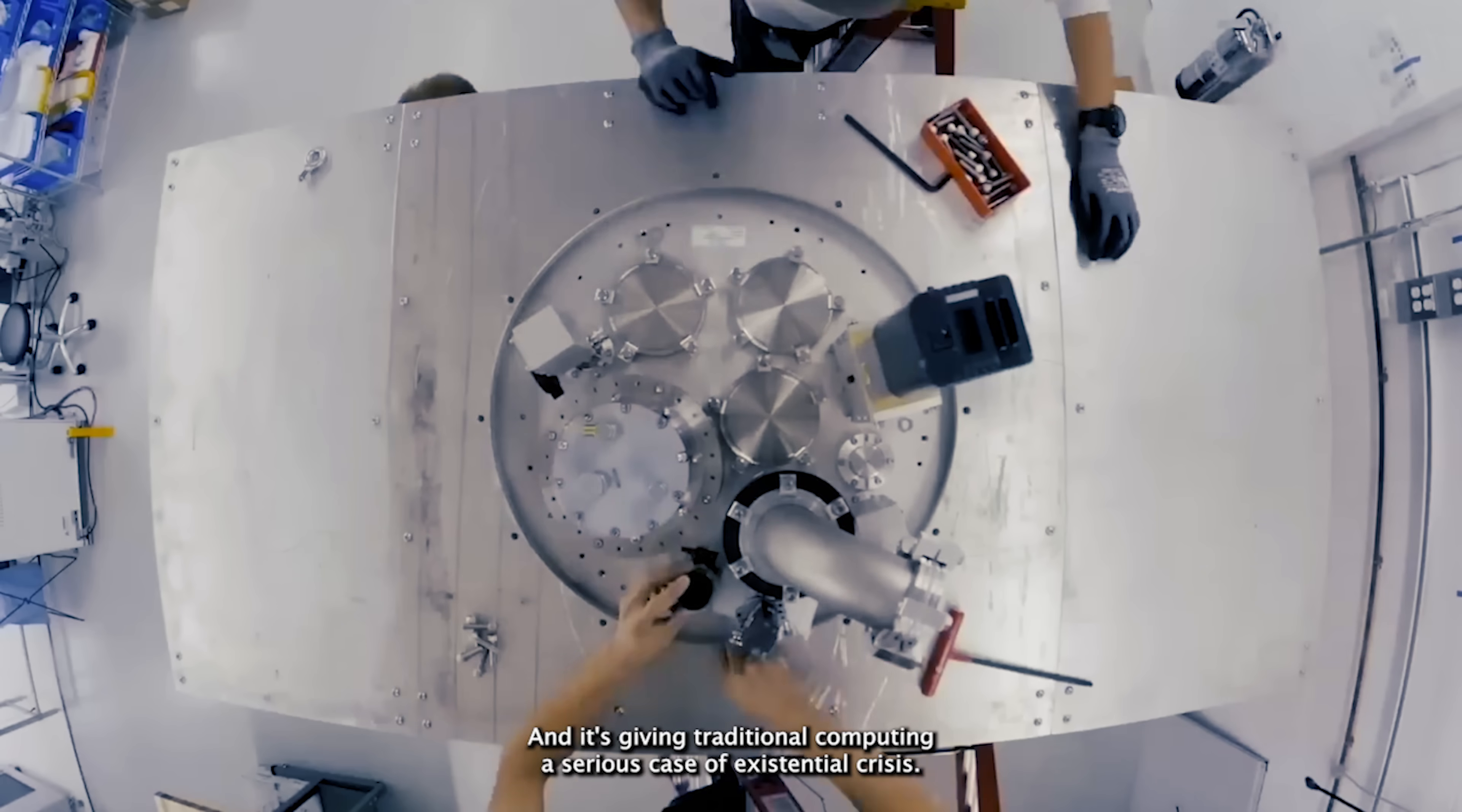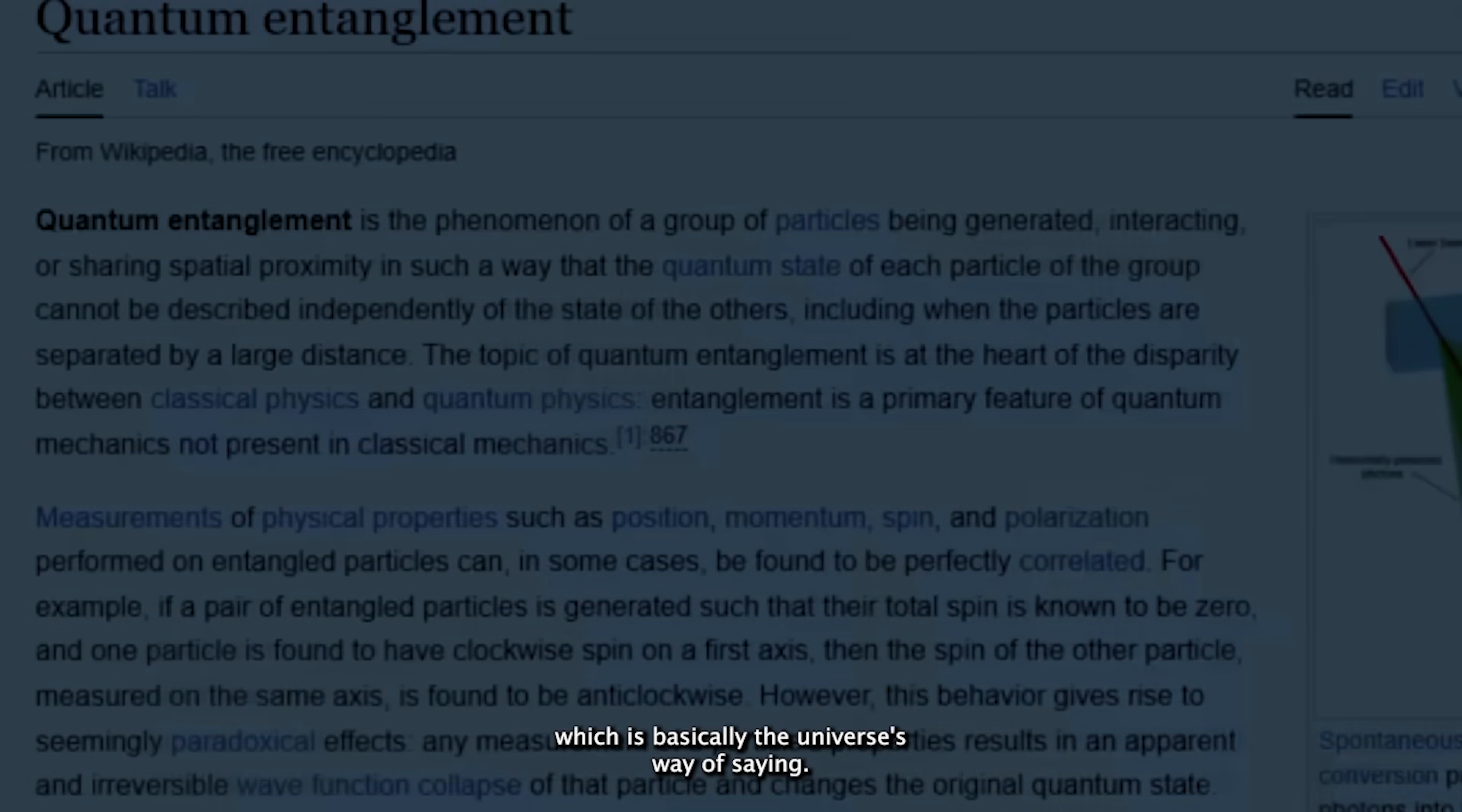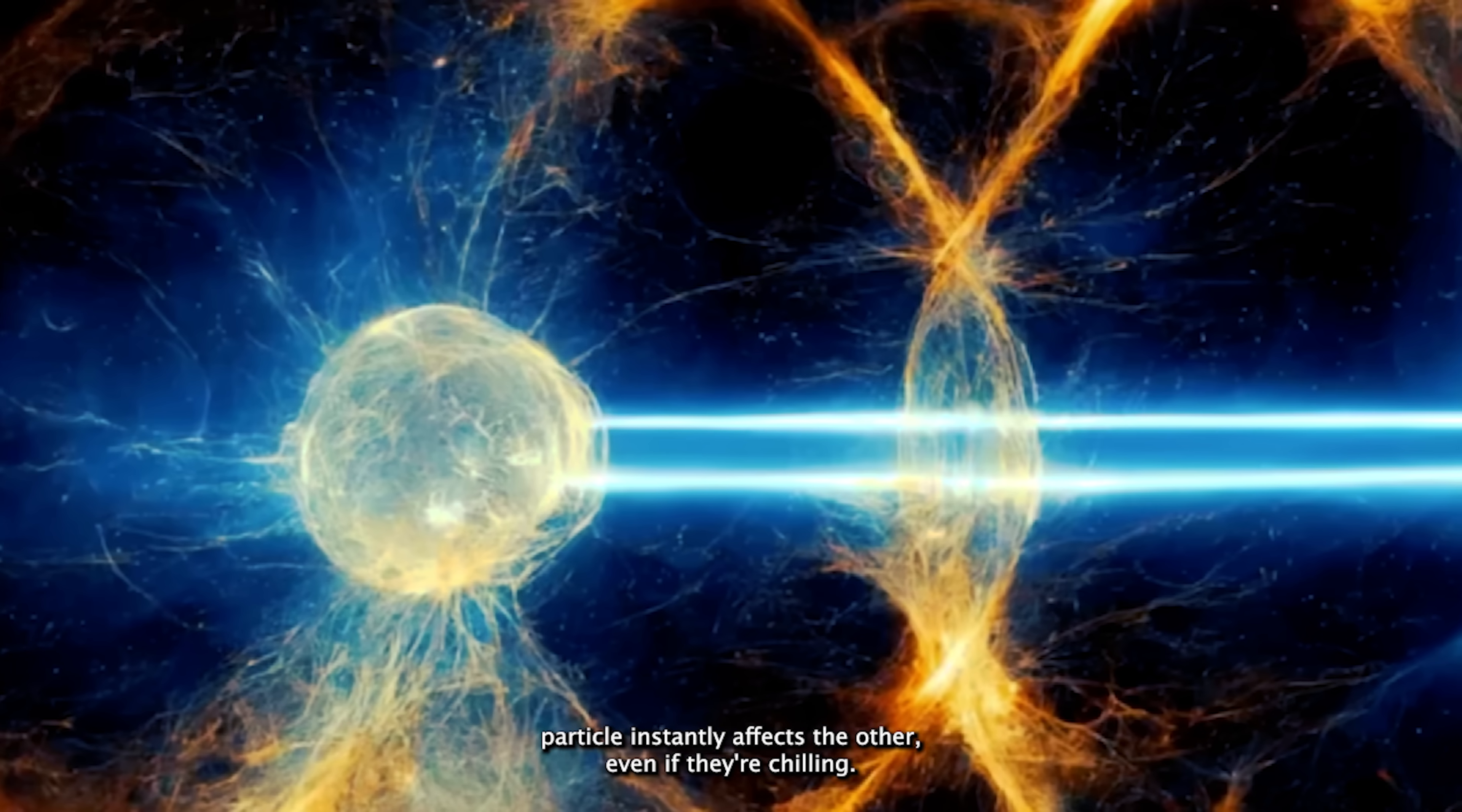This isn't physical teleportation—it's more like faxing the soul of a particle from point A to point B without moving the body. Scientists use something called quantum entanglement, which is basically the universe's way of saying these two particles are besties for life. Once entangled, anything you do to one particle instantly affects the other, even if they're chilling on opposite ends of the galaxy.